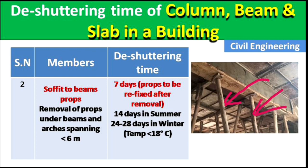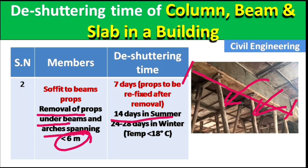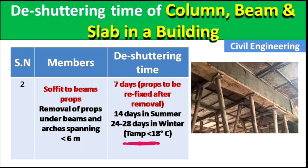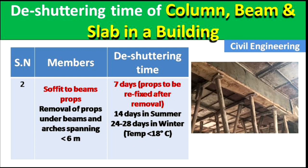Removal of props under beams spanning less than 6 meters: if the span of the beam is less than 6 meters, props should be removed after 14 days in summer and 24 to 28 days in winter, where winter means temperature below 18 degrees Celsius. Simply put, these props can be removed after 14 days in summer.